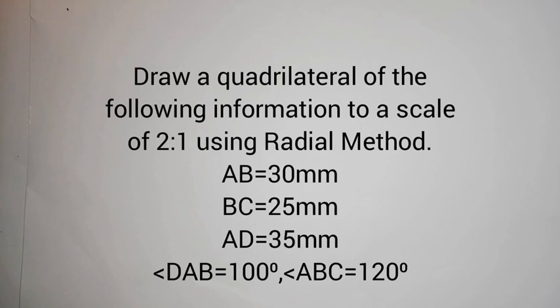To a scale of 2 to 1 using radial method. AB is 30 millimeters, BC is 25 millimeters, AD is 35 millimeters, angle at A is 100 degrees, and angle at B is 120 degrees. So how do we go about this?